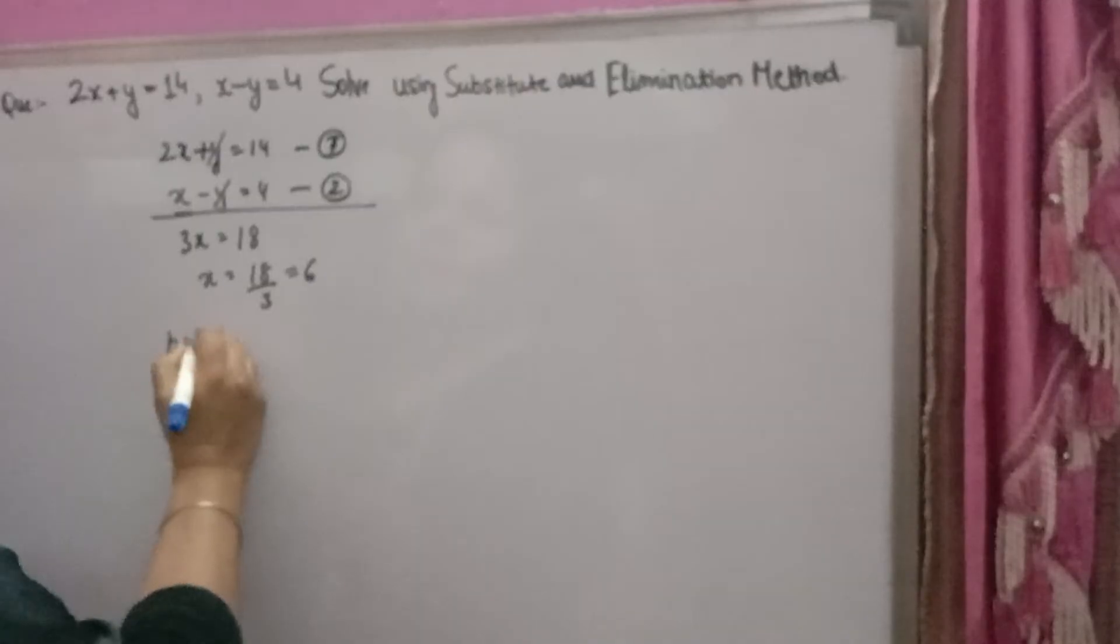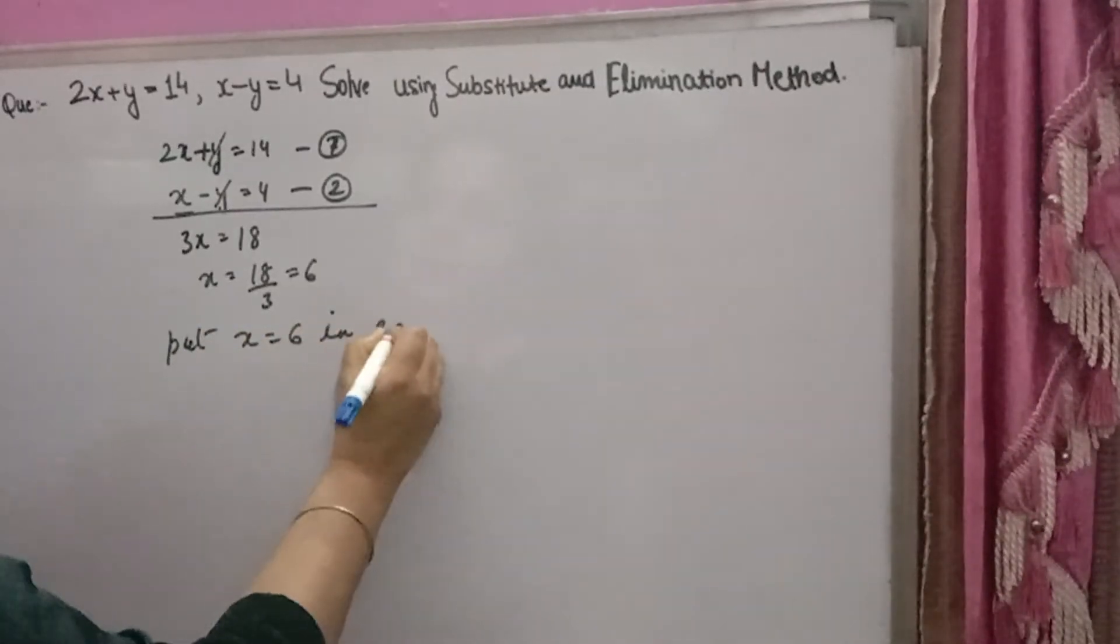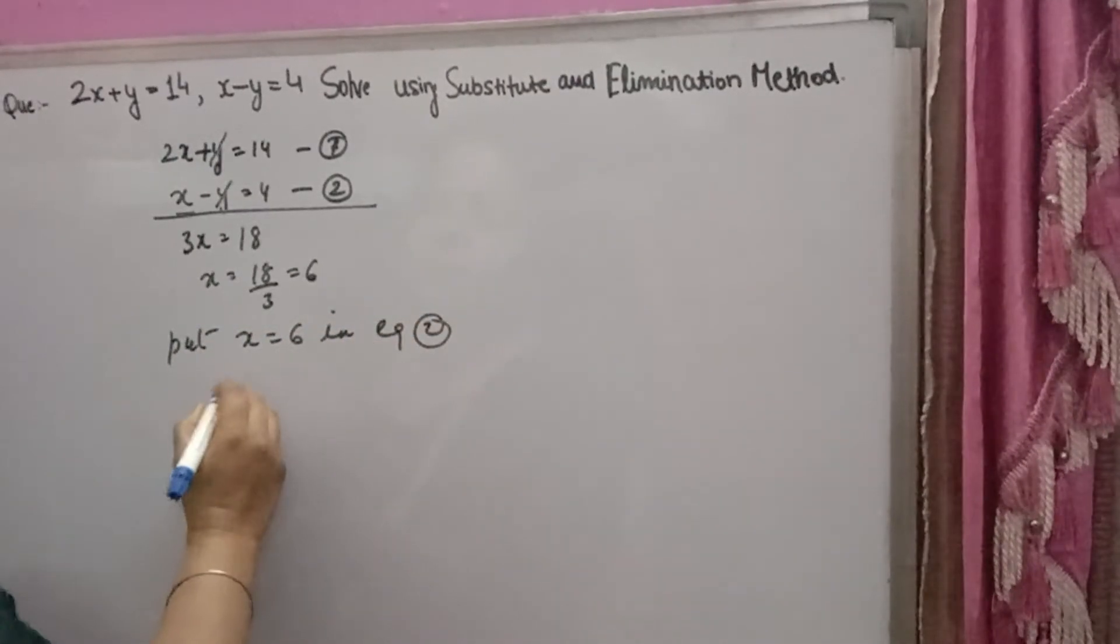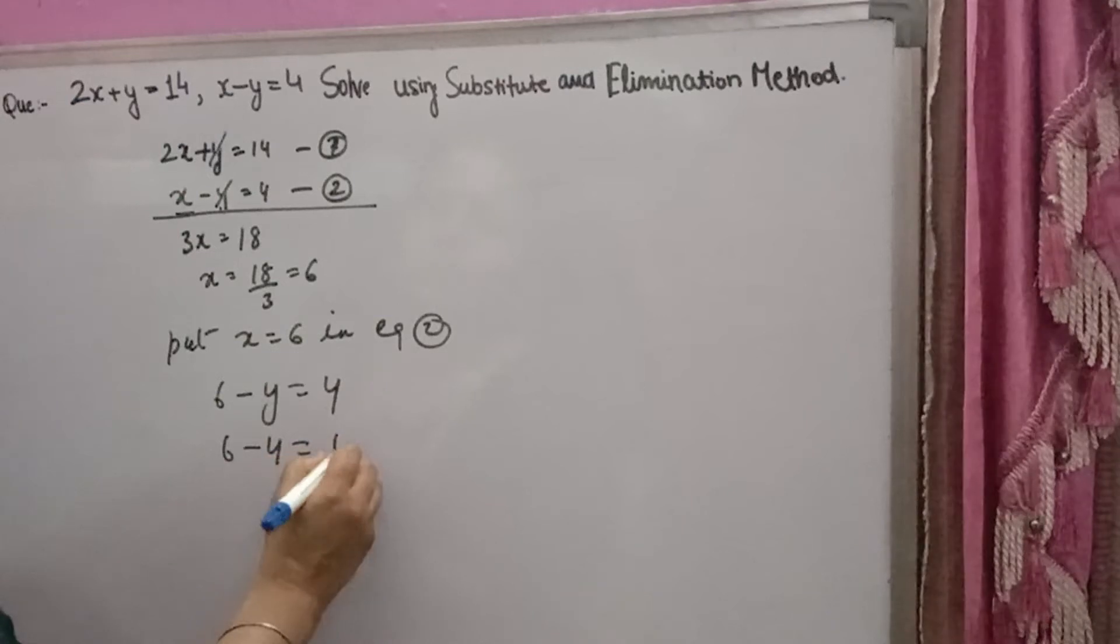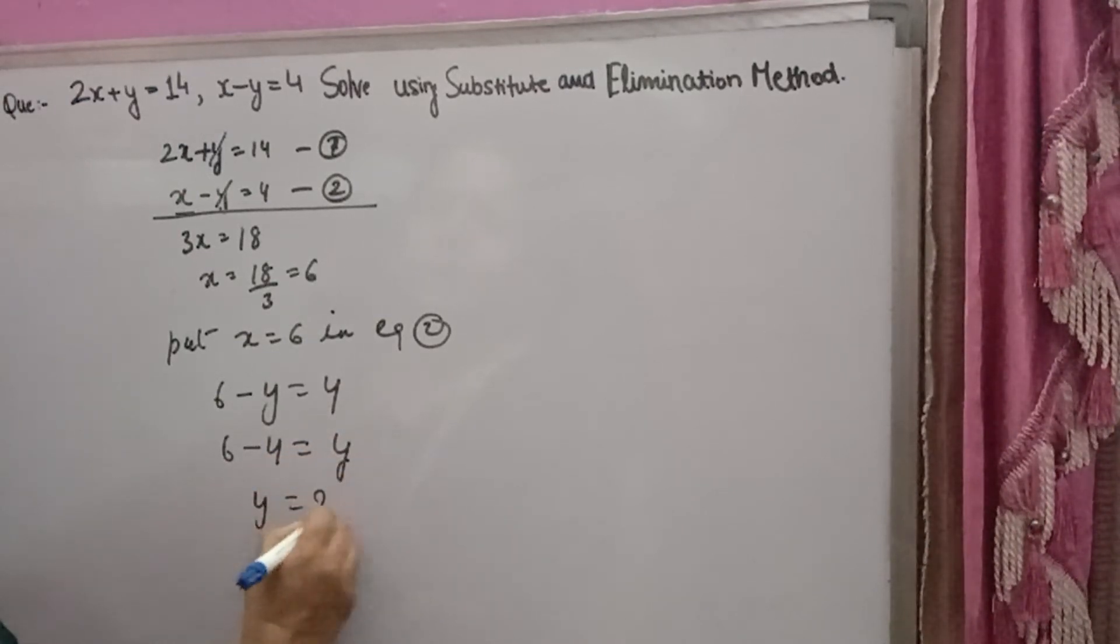Put x equals 6 in equation 2. You can put in 1 also. You will get 6 minus y equals 4. So 6 minus 4 equals y. Y will come 2. So y equals 2 and x equals 6 is the answer.